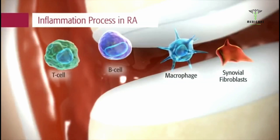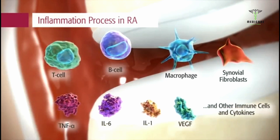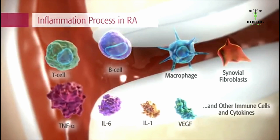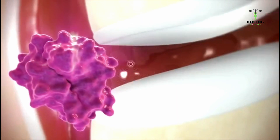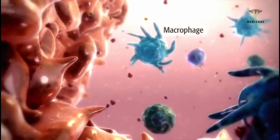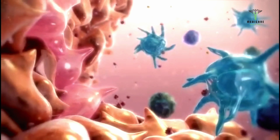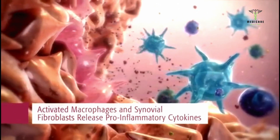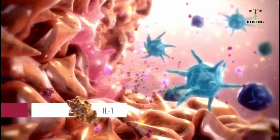Inflammation results from abnormal propagation and activation of many types of immune cells, resulting in the secretion of cytokines and other mediators that sustain and amplify the inflammatory environment. As a key pro-inflammatory cytokine, TNF-alpha along with other cytokines activates immune cells including macrophages, as well as other cells such as synovial fibroblasts.